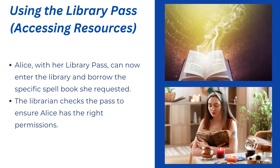Using the library pass to access the resource: Allies with her library pass can now enter the library and borrow the specific spell book she requested. She cannot just take any book because she doesn't have access to every book in the library. The librarian checks the pass to ensure Allies has the right permissions, verifies whether she really has access to the specific book she asked for, and if yes, gives her that book.